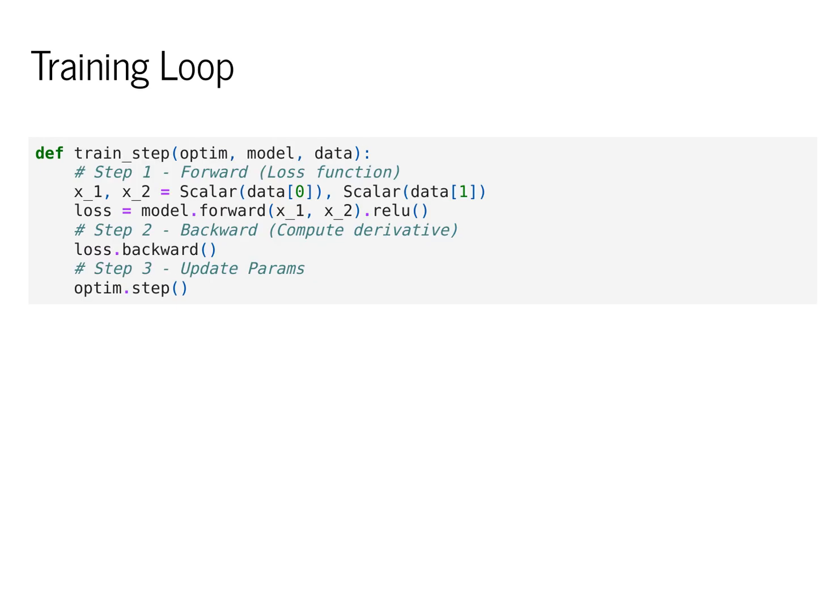Once we have this module, we can actually train it on data. This is the fitting process we've described so far. We first define our input x1 and x2. We then call this new model.forward function. This returns a scalar value loss. Note that this loss is computed by calling all the forwards on the scalar functions under the hood, and we could actually look at the graph structure itself. Once we have this graph structure, we can then call backwards.